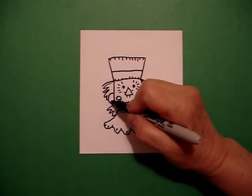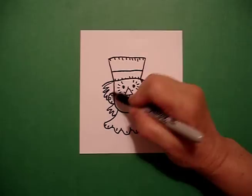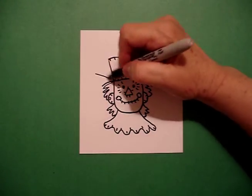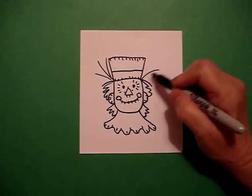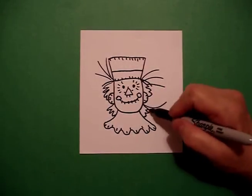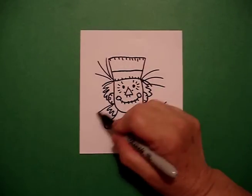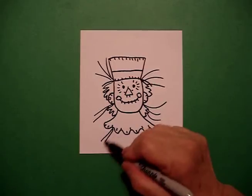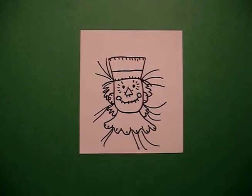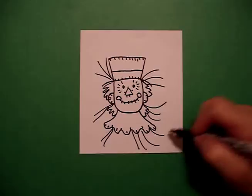A couple lines on the ears and now we're ready to add the straw, which is basically little lines just sticking out so it looks like straw. There we go.